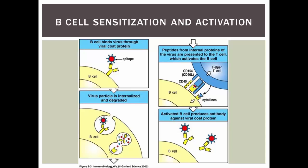Let's start with sensitization of the B cells and their activation. B cells will stumble across some antigen, shown here with an epitope sticking out. The B cells have antibodies stuck on their surface. These are receptors that are going to bind to the epitope of a particular pathogen.